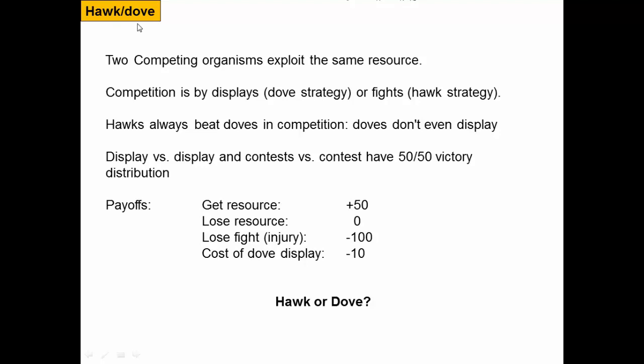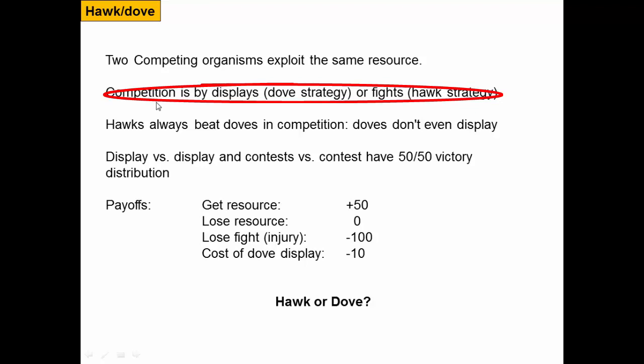Our second game is called Hawk-Dove. In this game, we think about two competing organisms exploiting the same resource. When they compete for that resource, competition happens either by displays — where an individual puffs themselves up to try to win the resource, which we term the Dove strategy because no actual combat is involved — or by fighting and potentially causing physical damage, which we term the Hawk strategy.